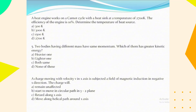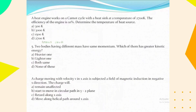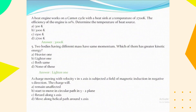A heat engine works on a Carnot cycle with a heat sink at a temperature of 270 K. The efficiency of the engine is 10 percent. The temperature of the heat source is 300 K. Two bodies having different masses have the same momentum. The one with greater kinetic energy is the lighter one, because kinetic energy is inversely proportional to mass.